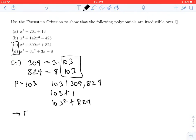So by Eisenstein's criterion, we know that x^5 + 309x^3 + 824 is irreducible over Q.